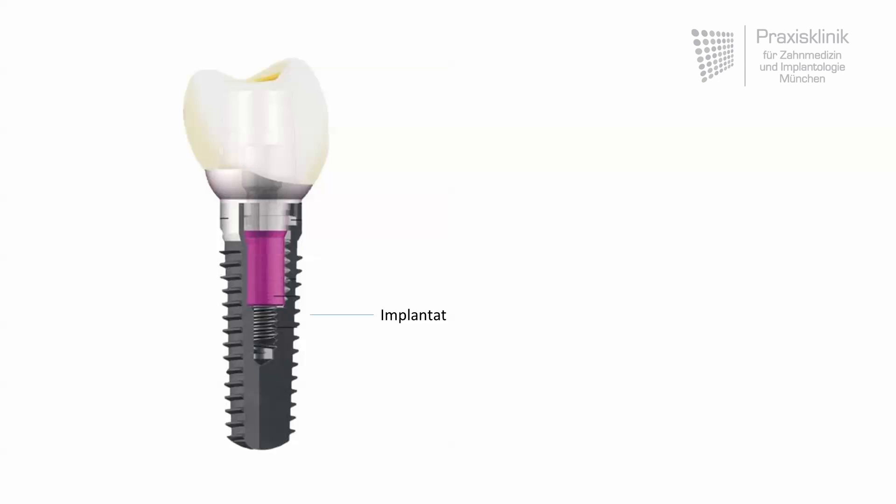Today modern implant systems consist of different parts. The first part is the implant body which is fixed into the jawbone. The implant body is a hollow screw with outer and inner threads. The second part is the connecting component, the so-called abutment.